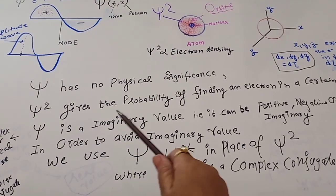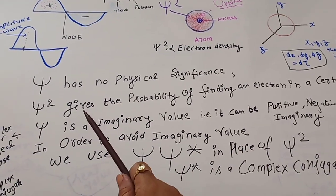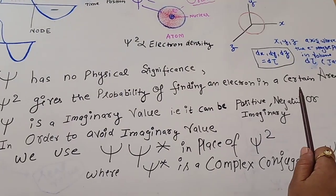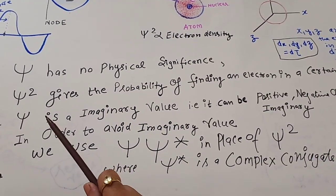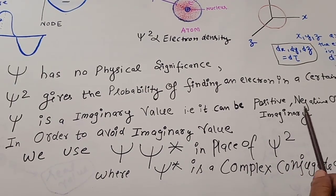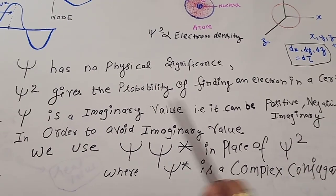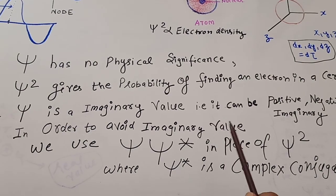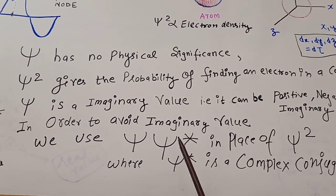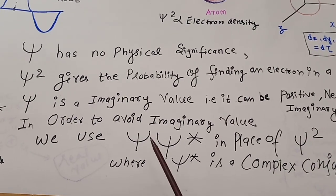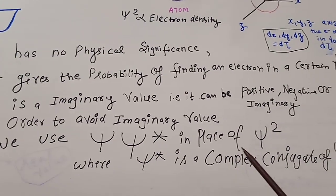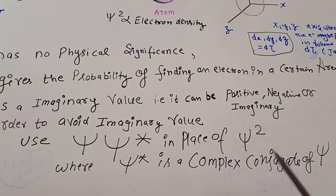Psi has no physical significance, and psi squared gives the probability of finding an electron in a certain area. Psi is an imaginary value — it can be positive, negative, or imaginary. So, in order to avoid imaginary values, we use psi-star in place of psi squared — that is, psi multiplied by psi-star, where psi-star is the complex conjugate of psi.